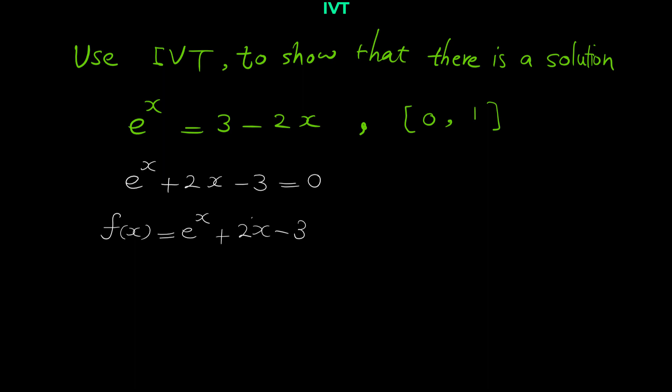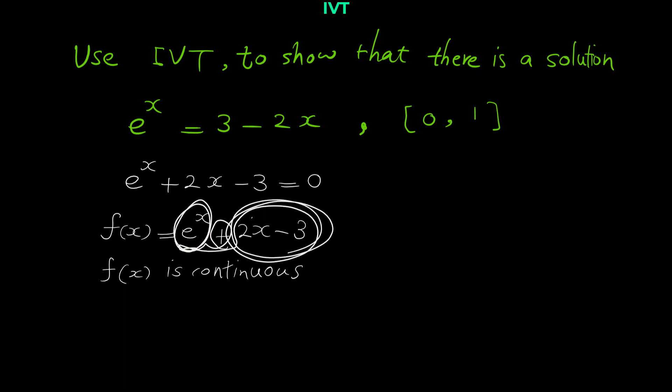Immediately after defining f(x), you have to check its continuity in the given interval. The function e to the x plus 2x minus 3 is obviously continuous, so you have to mention that f(x) is continuous. In this case, f(x) is the sum of e to the x — an exponential function — and 2x minus 3 — a polynomial function. The sum of two continuous functions is also continuous.